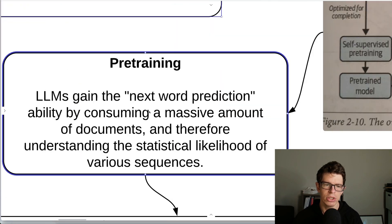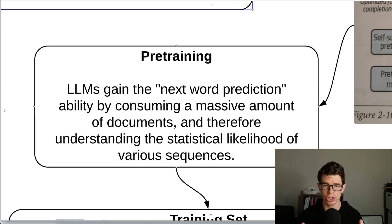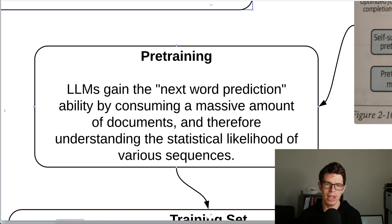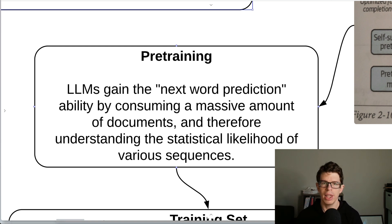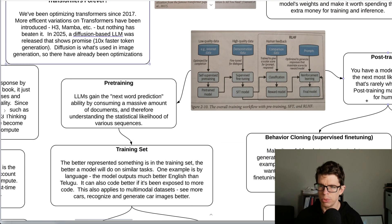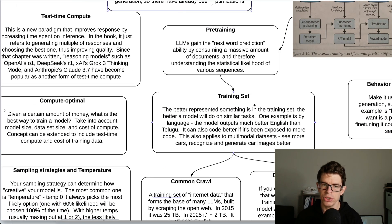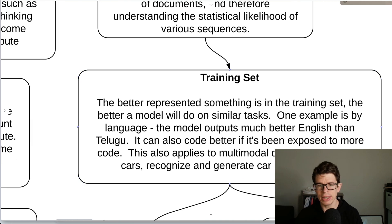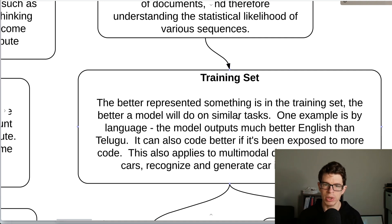So what do each of those mean? Pre-training is how the LLMs gain next word prediction. They consume a massive amount of documents and understand the statistical likelihood of various sequences. So if you use one of these without post-training, it'll just do the next word, and the next word, and the next word.